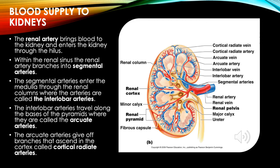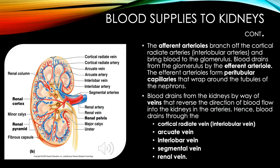Blood supply to the kidneys: The renal artery brings blood to the kidney and enters through the hilum. Within the renal sinus, the renal artery branches into segmental arteries. The segmental arteries enter the medulla through the renal columns as the interlobar arteries. The interlobar arteries travel along the bases of the pyramids as the arcuate arteries, which give off branches ascending in the cortex called cortical radiate arteries.